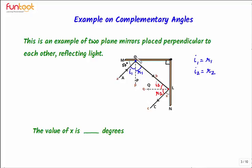This angle is 90 degrees because OP is the normal to the mirror. If the complete angle is 90 degrees and this angle is 50 degrees, that means I1 will be 40 degrees. So writing I1 as 40 degrees. If I1 is 40 degrees then R1 is equal to I1, so R1 will also be equal to 40 degrees.